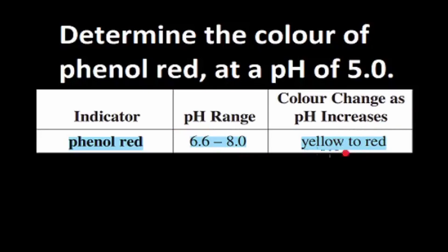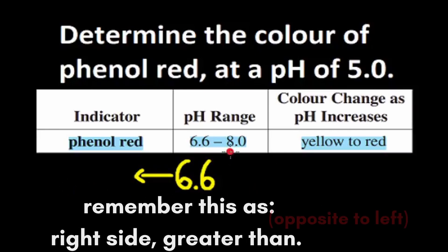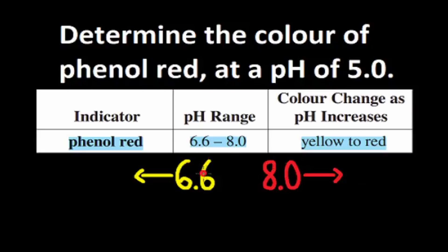Let's treat this dash and this 2 as the middle line. 6.6 and yellow would be on the left side, while 8.0 and red would be on the right side. Since 6.6 and yellow are both on the left side, that means all pHs less than 6.6 would be yellow. 8.0 and red are both on the right side, so all pHs greater than 8.0 will be red. And between 6.6 and 8.0, we're going to mix the two colors — yellow and red — that makes orange.